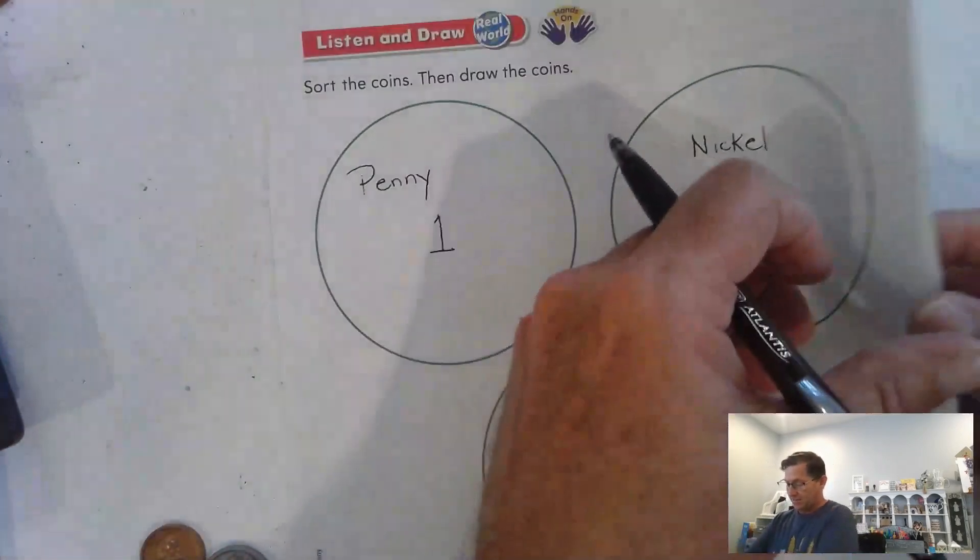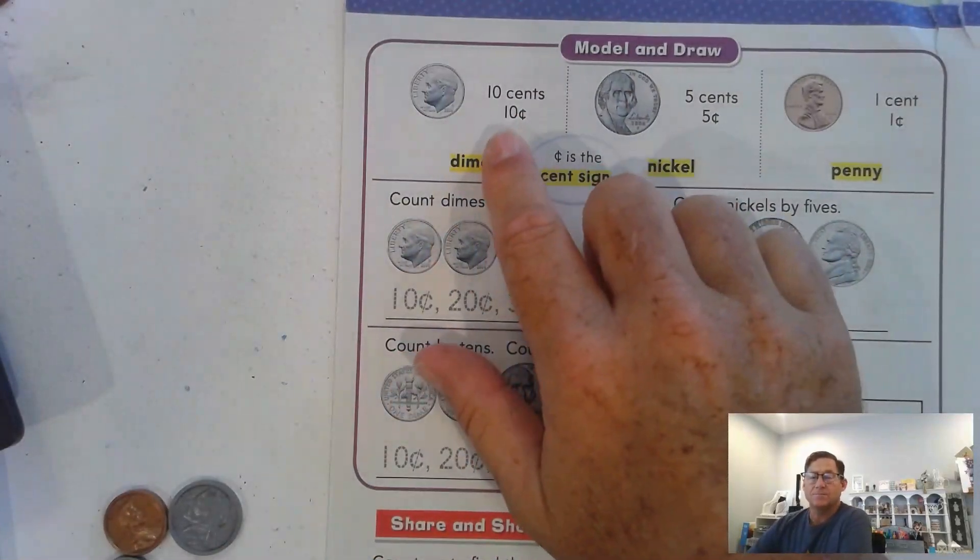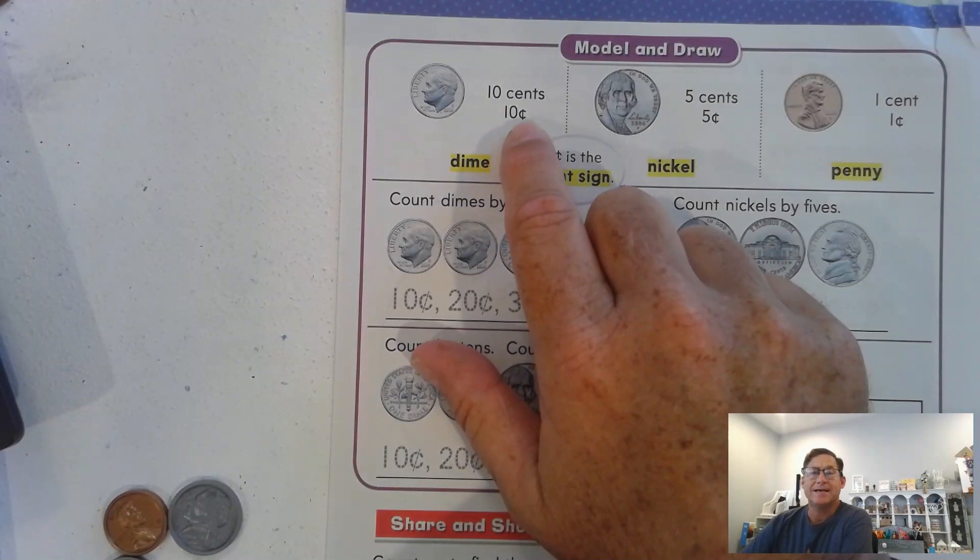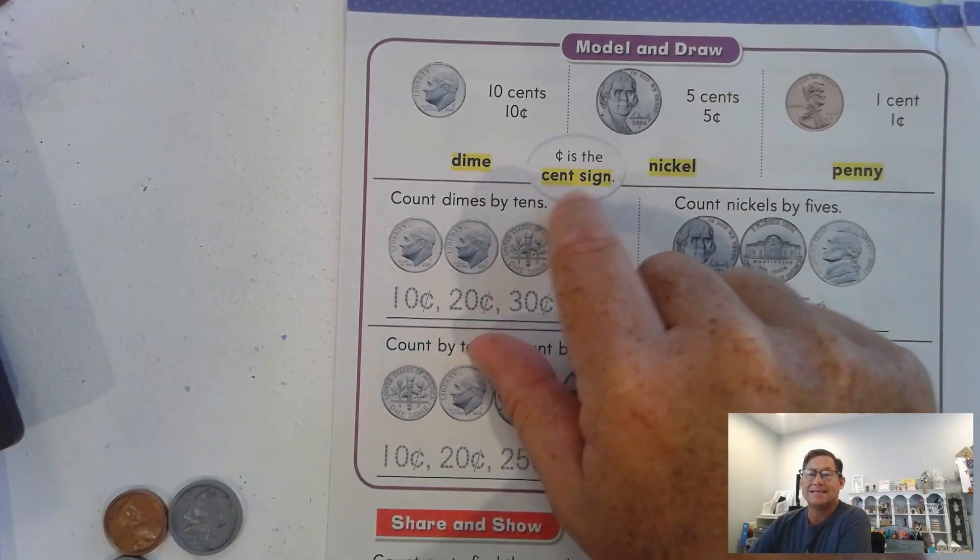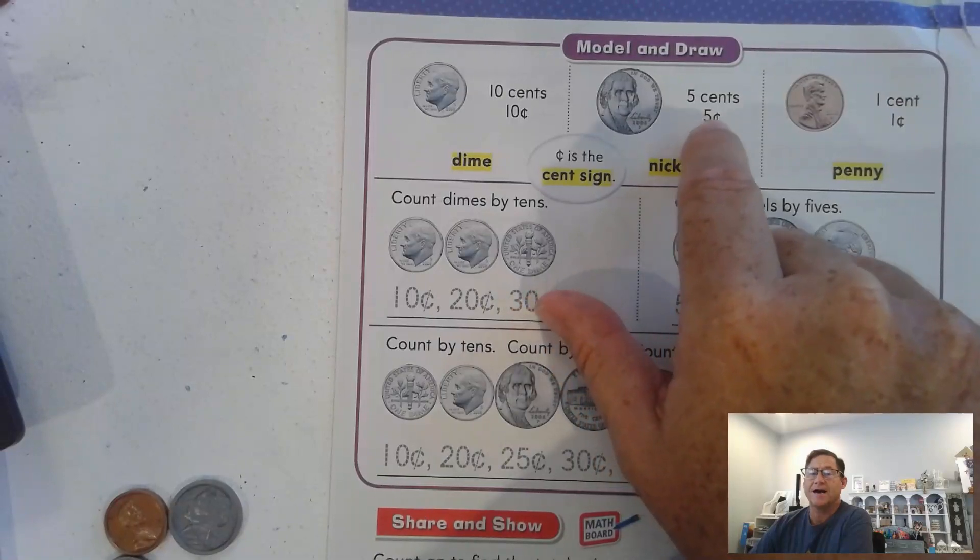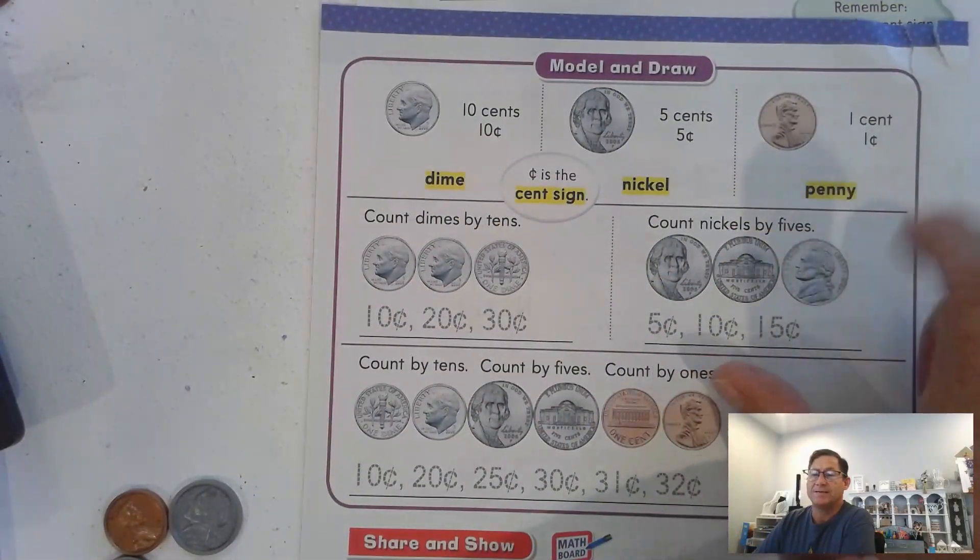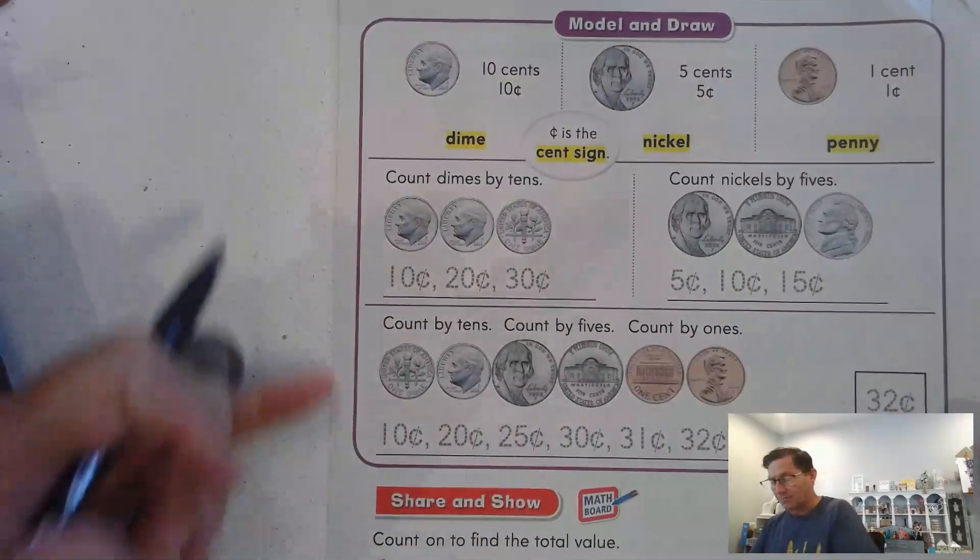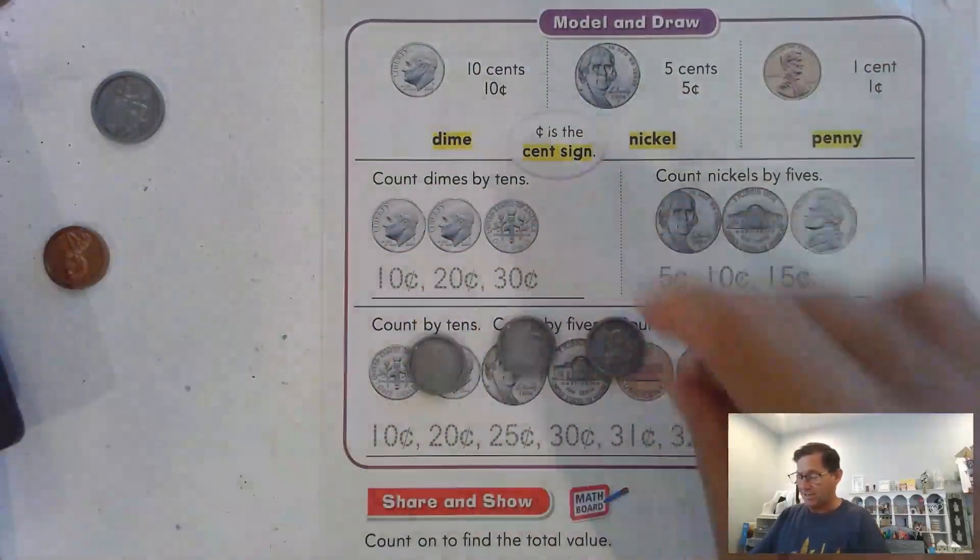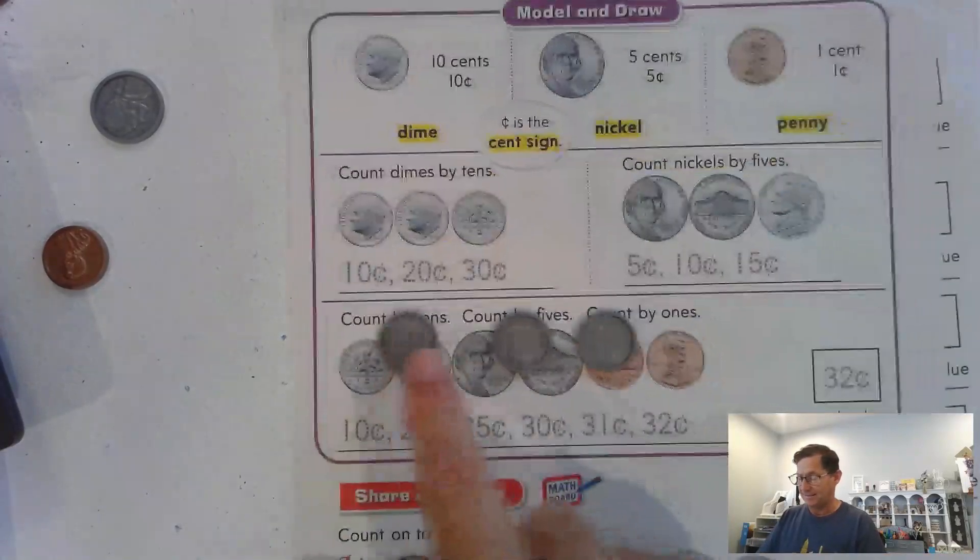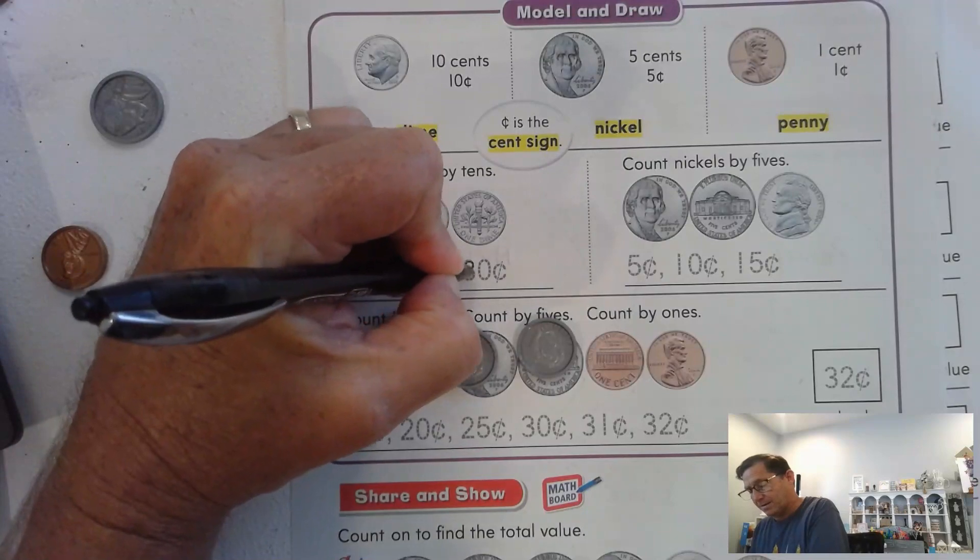Let's look at page 346. A dime is 10 cents or 10 pennies. We write 10 cents with the cent sign. Count dimes by tens. In this drawing we have three dimes. Well, each dime is worth 10, so we count by tens: 10, 20, 30. So 10 cents, 20 cents, 30 cents.